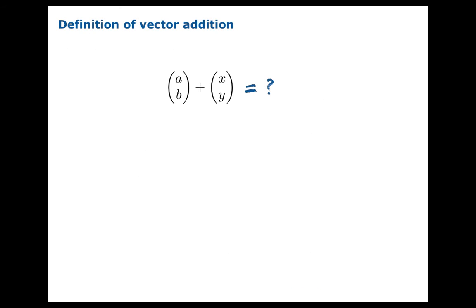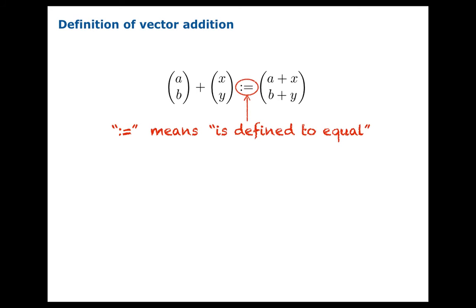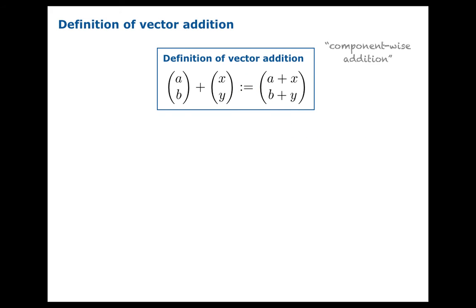We can do a couple of things with vectors. We can add them together, but what would that mean? What we do is define it to be this expression on the right. This symbol means that we're defining it to equal — it's not equal just because there was no relationship until we defined the relationship. We don't know what it means to add two vectors until we define that, and this is how we're defining it. Here are five vectors, they all have the same magnitude and direction.